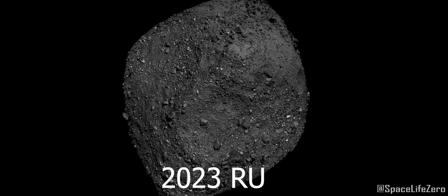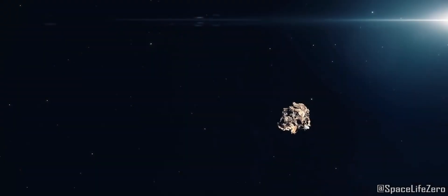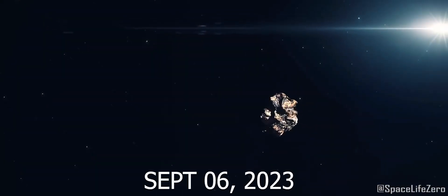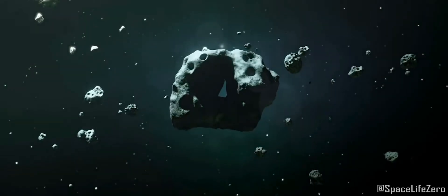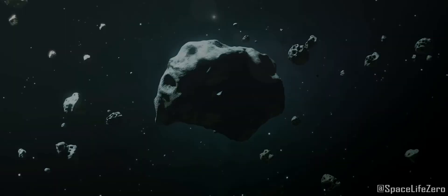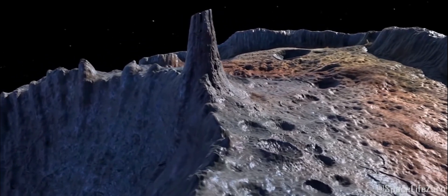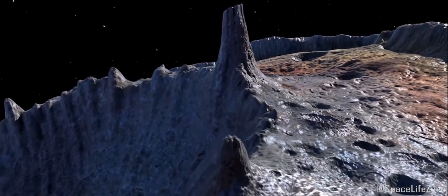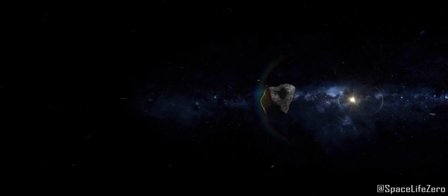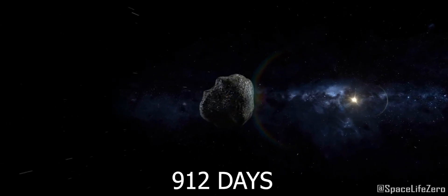Asteroid 2023 RU. It was first discovered on September 6, 2023, and it also belongs to the Apollo group. This near-Earth object has an estimated diameter of about 26 meters. It makes one orbit around the Sun in 912 days.